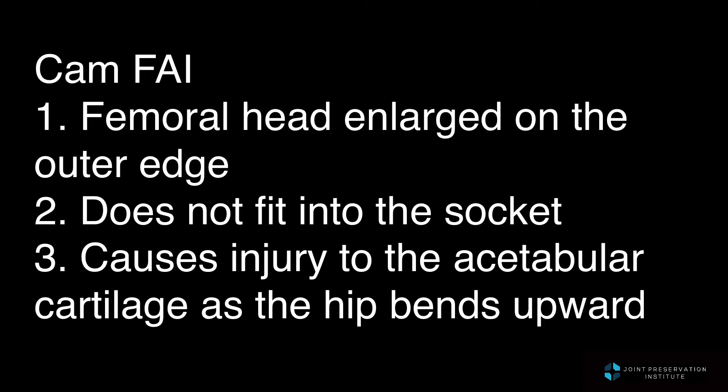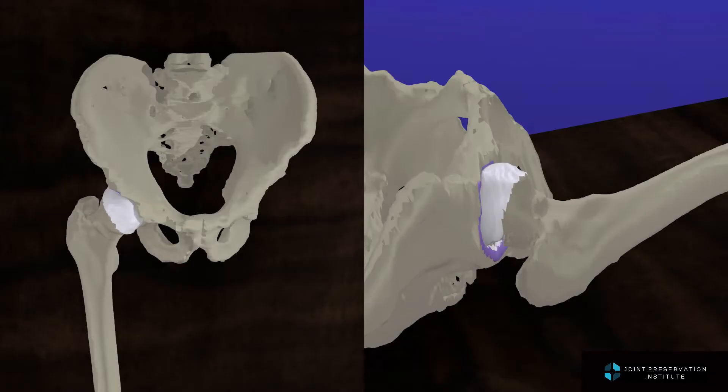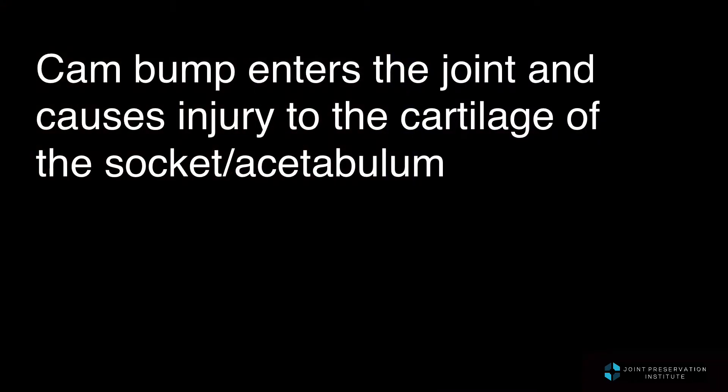CAM FAI occurs when the femoral head is enlarged on its outer edge. As a result, it does not fit into the socket. This causes injury to the acetabular cartilage as the hip bends upward. In CAM FAI, the hips may show elements of the bump in childhood. The bumps often get larger in adolescence and with increased activity and impact sports. In this part of the animation, we can see the enlargement of the femoral head at the head-neck junction. The CAM bump enters the joint and causes injury to the cartilage of the socket or acetabulum.